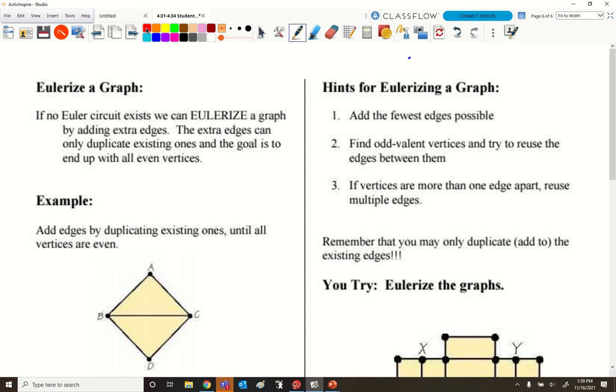So the back page is page number 47. You're going to write the number on it and then we're going to be able to put stuff into our notebook and hopefully these things are going to be done. Now, right here, we're going to Eulerize a graph. If no Euler circuit exists, then we can Eulerize a graph by adding extra edges. Draw another line.